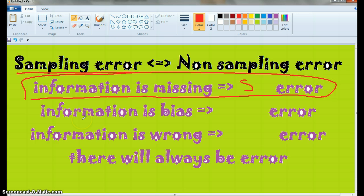If it's bias, it's actually a non-sampling error. It's not simply because you don't have all the information, so it's not going to be 100% accurate. It's actually bias.